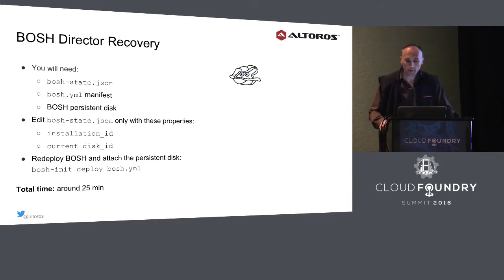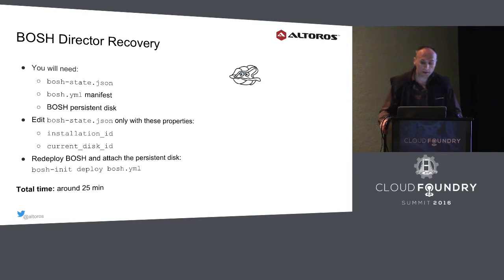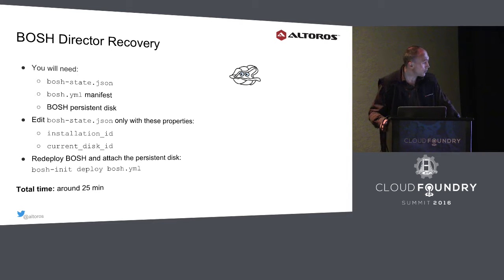So what does the plan for recovering BOSH director look like? The approach is quite straightforward. You need to locate the BOSH state file and the deployment manifest. The persistent disk for the BOSH virtual machine should also be available. First, we have to edit the BOSH state file, leaving only several properties, and then we deploy BOSH and attach the persistent disk.